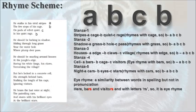Let's analyze the rhyme scheme of the poem. You're expected to notice the ending words of each of the lines. Look at stanza 1: 'stripes' is named A, 'cage' as B, 'quiet' as C, and 'rage' — as it rhymes with 'cage' — is B again. So the rhyme scheme of stanza 1 is ABCB.